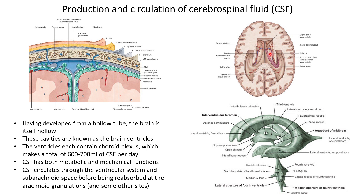There are descriptions from the early neurosurgeons of when they first entered the ventricular system surgically on living patients — when they picked up the choroid plexus in their forceps they saw it literally dripping CSF, since it is constantly producing it. This CSF fills the ventricular system and bathes the outside of the brain and spinal cord.